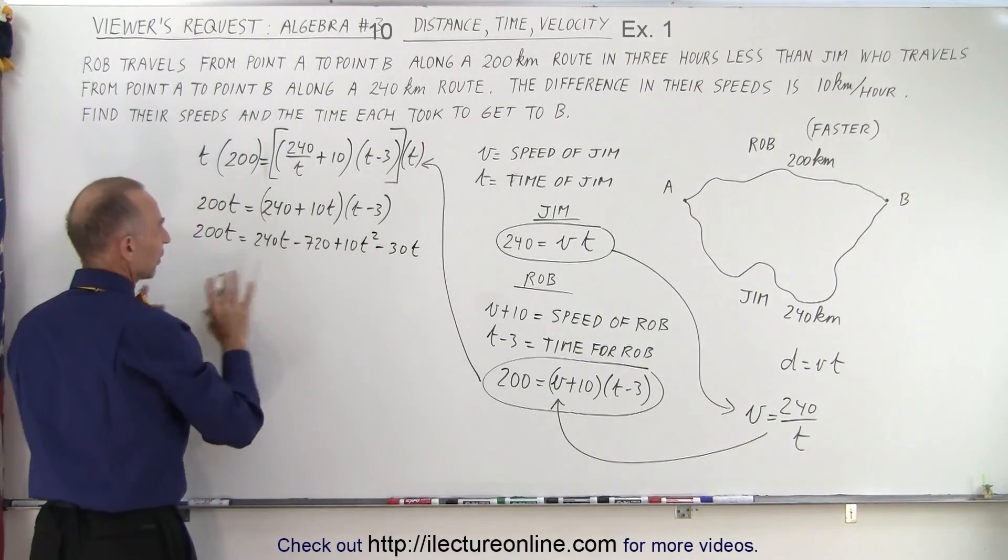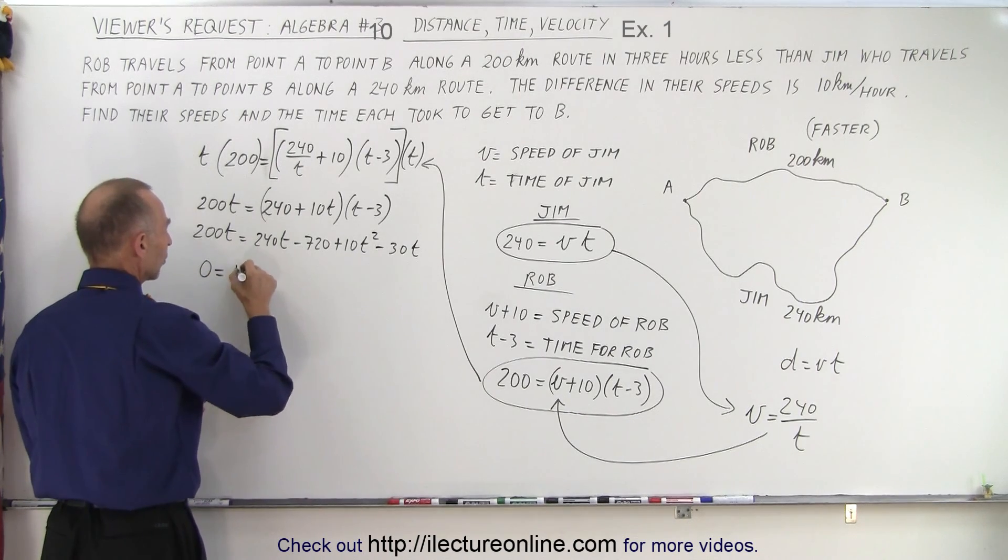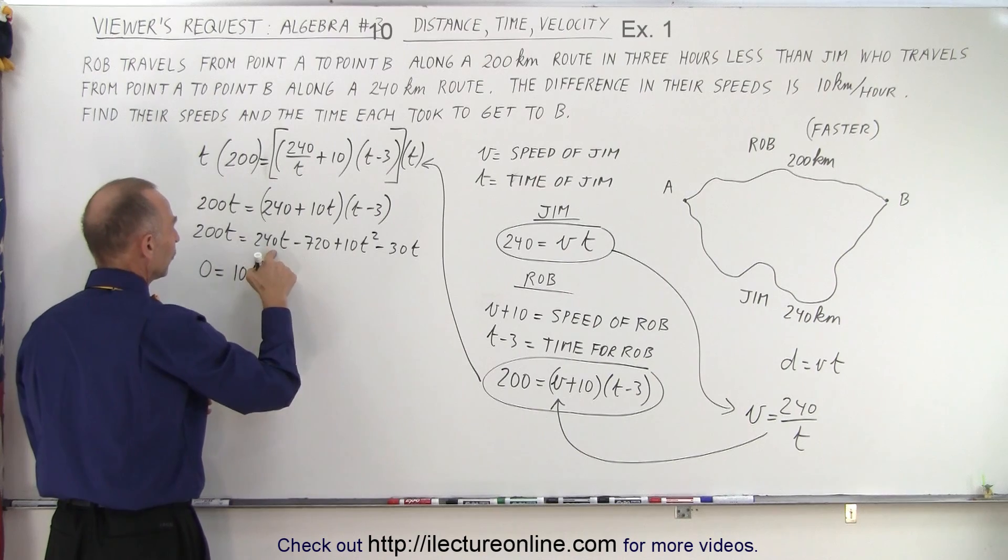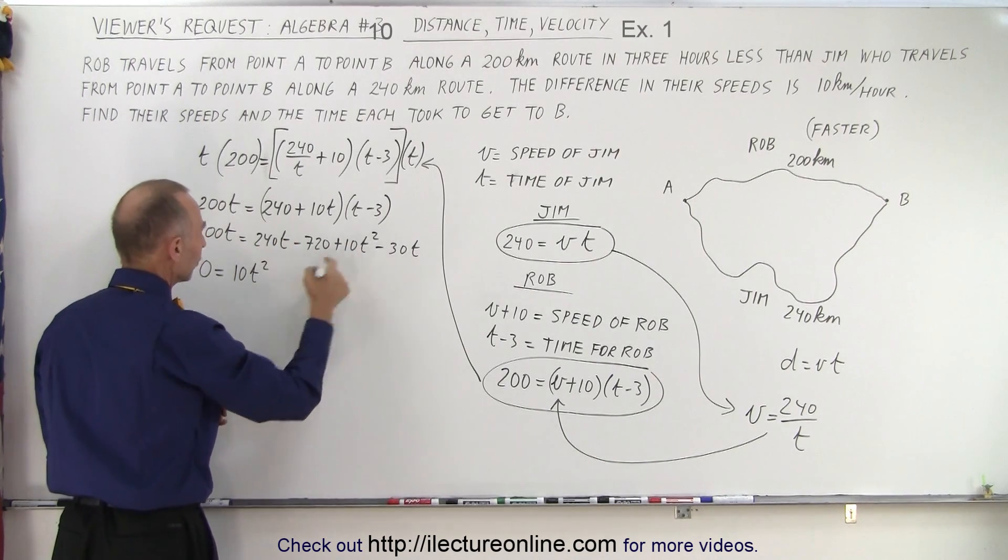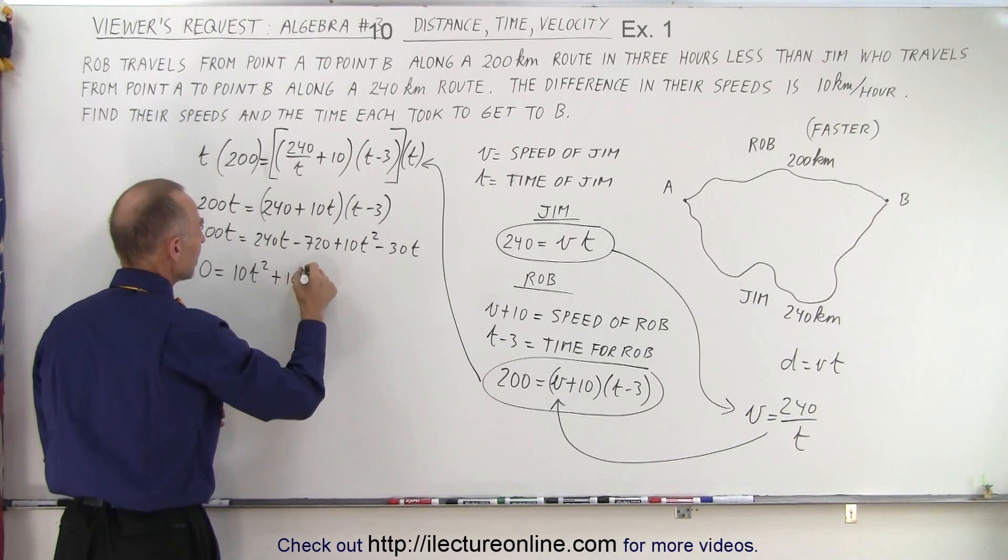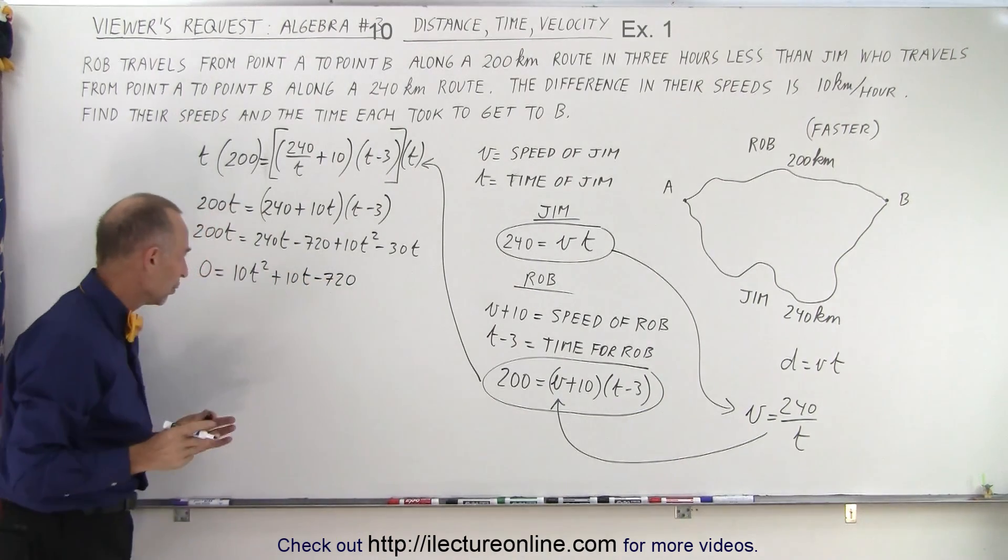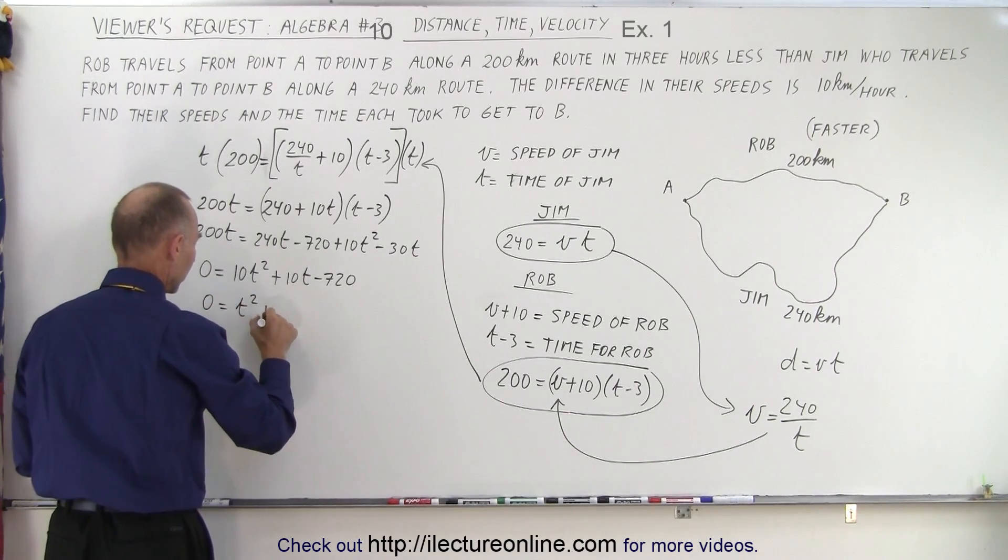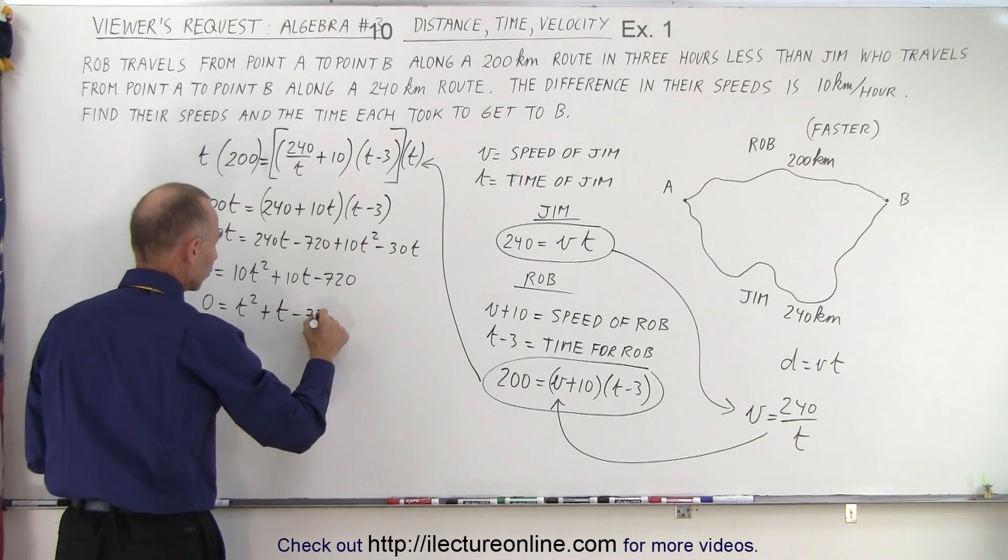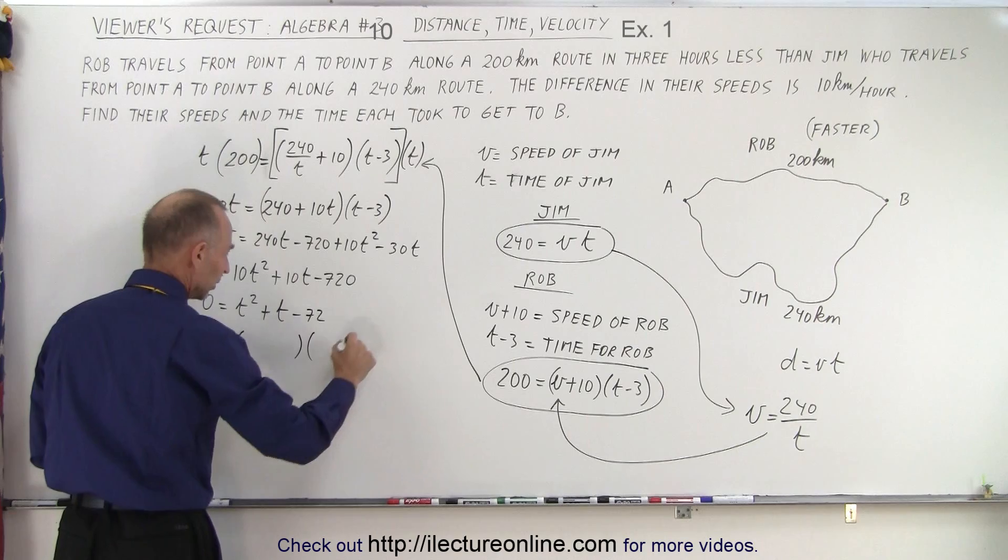So now I'm going to move everything over to one side. So zero equals the 10T squared term, 240 minus 200 that would be 40, minus 30 that would be plus 10T, and minus 720. And notice I can divide by 10 so I get zero equals T squared plus T minus 72 and I can probably factor that.